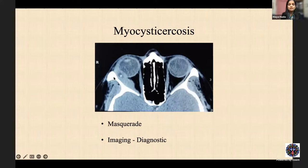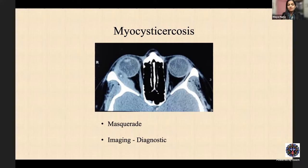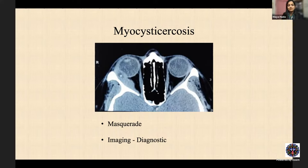Myocysticercosis — cysticercosis lodged in an extraocular muscle — is a typical masquerade. It can present in different ways: the muscle is inflamed, mimicking myositis or pseudotumor. The patient may have limitation of extraocular movements, periorbital swelling and edema, and a cellulitis-like picture. A high index of suspicion is required. If a patient has inflammatory orbital signs along with movement limitation, think myocysticercosis and get imaging done.